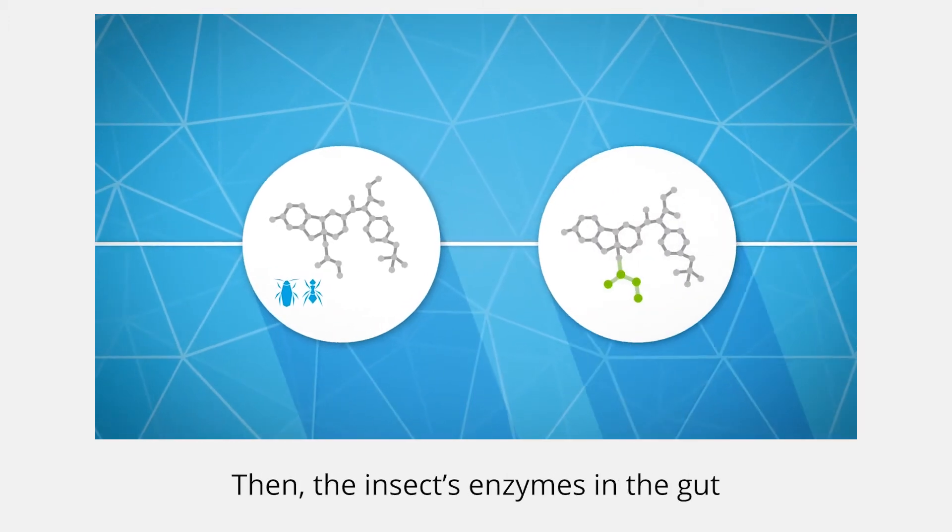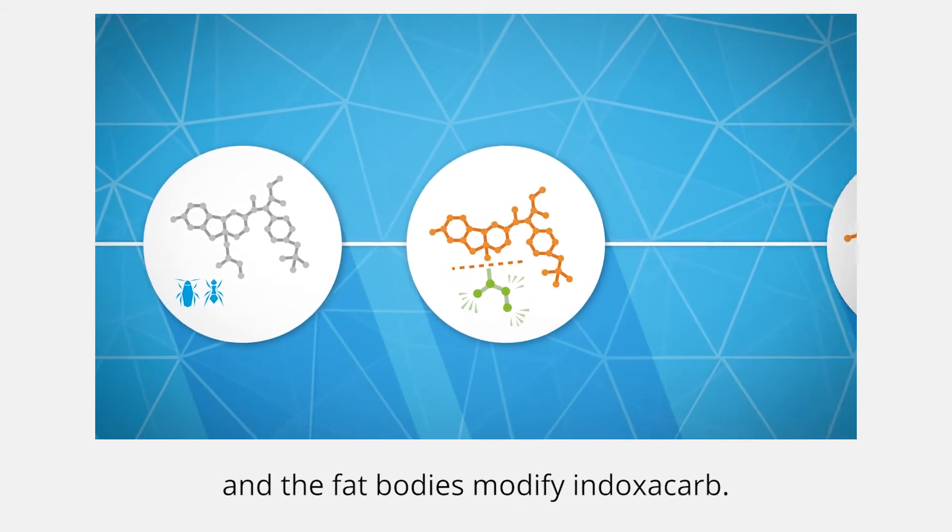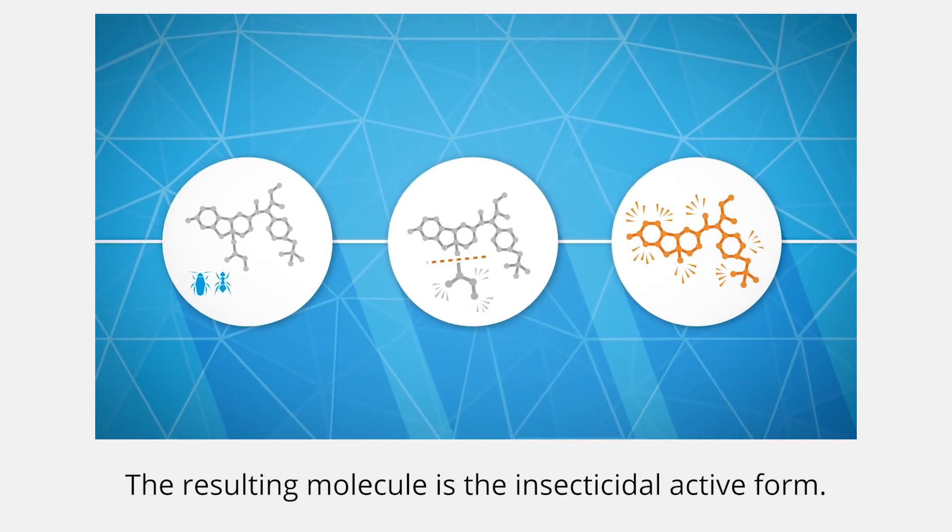Then, the insect's enzymes in the gut and the fat bodies modify indoxacarb. The resulting molecule is the insecticidal active form.